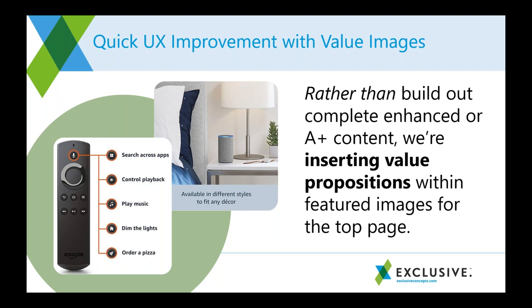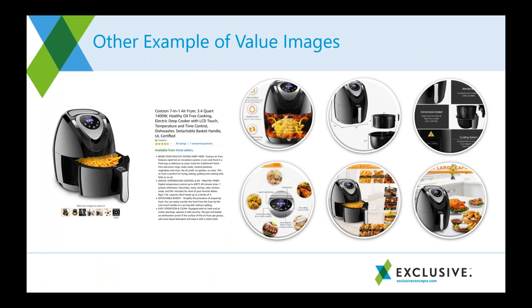Value images are an area with significant growth over the past few years. Instead of standard product images at different angles, sellers are using additional text and creative overlays — taking the value propositions from your bullet points and overlaying that text directly into the images. We see significantly higher conversion rates and stronger interaction with products that have value images or enhanced brand content. People actually read bite-sized text in images more frequently than they read full bullets, even though full bullets help more with A9 relevancy.